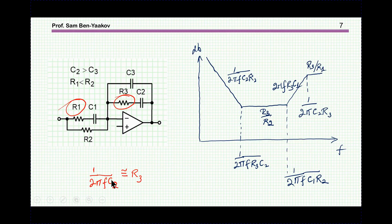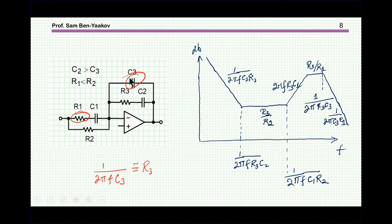Next, the impedance of C2 becomes comparable to R3 again; C2 becomes a short compared to R3, and we have an inverter with gain R3 over R1. Finally, C3 comes into effect: its impedance becomes significant and lower than R3, giving another integrator between C1, C3, and R1, going down at minus 20 dB per decade. This is the transfer function assuming an ideal amplifier.